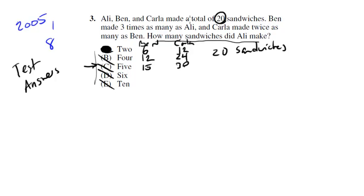Let's show you the algebra way as well. So Allie, Ben, and Carla made a total of 20 sandwiches. So we know that A plus B plus C is equal to 20, and we're going to swap out those variables in a second, but I'm just using this to remember. Ben made 3 times as many as Allie, and Carla made twice as many as Ben. So notice Allie made the smallest amount. Ben made 3 times as many as Allie, and Carla made twice as many as Ben.